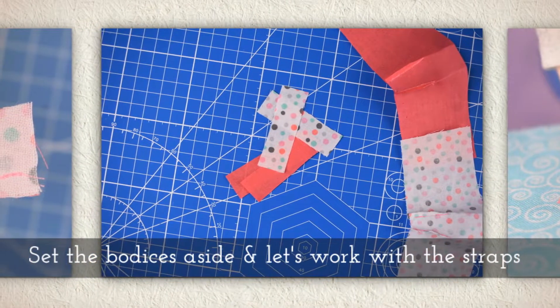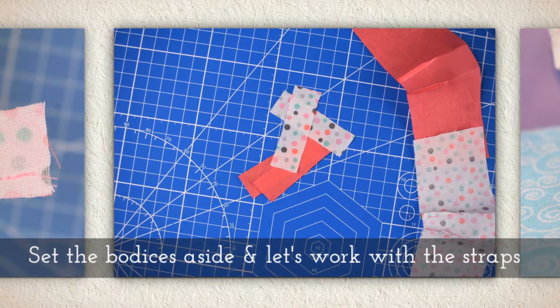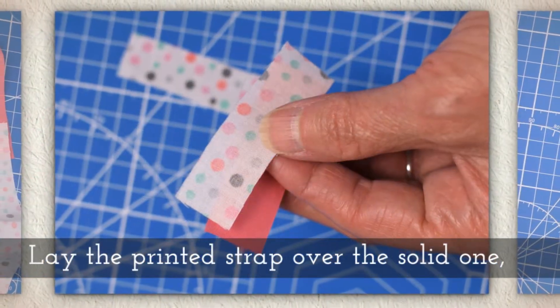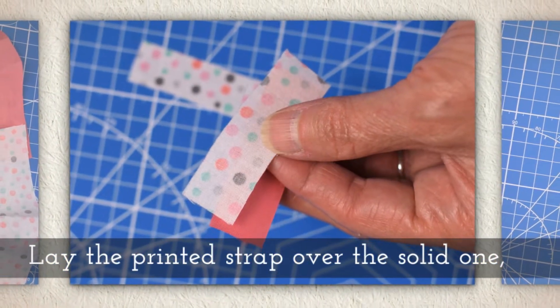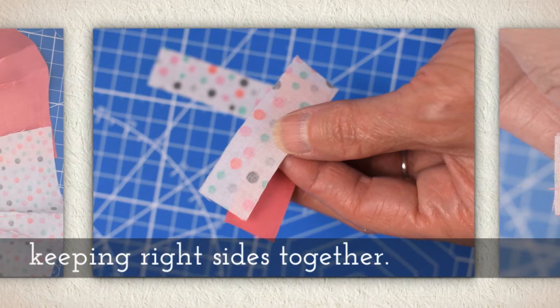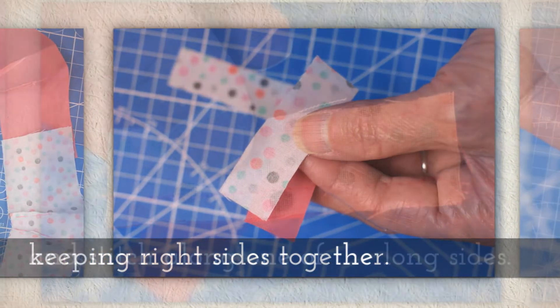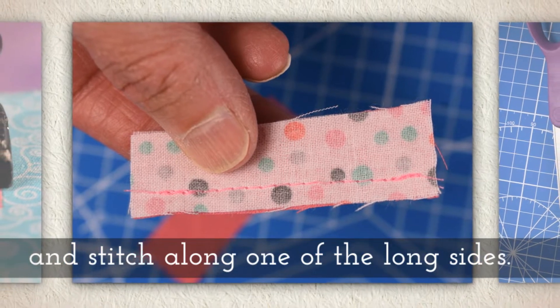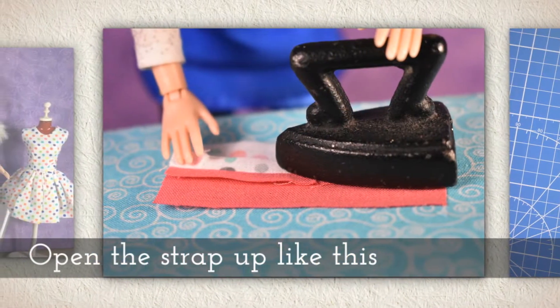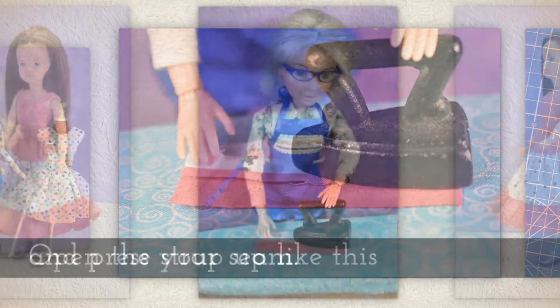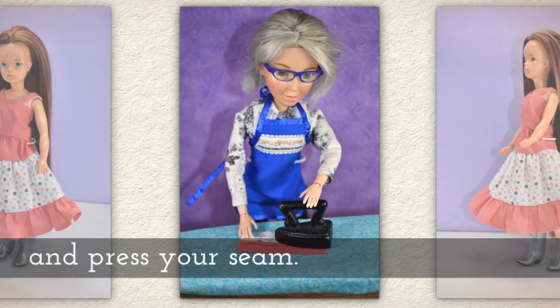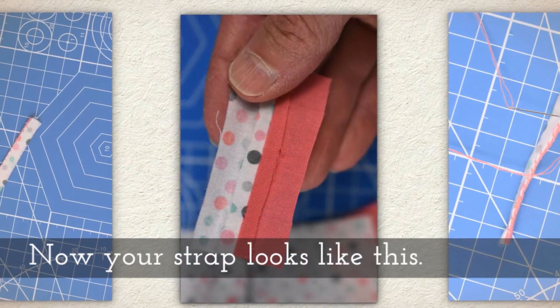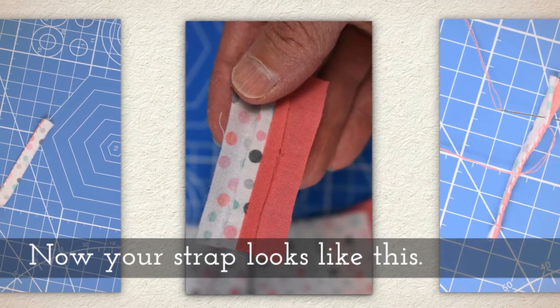Set the bodices aside and let's work with the straps for a moment. Lay the printed strap over the top of the solid fabric strap keeping right sides together and stitch along one of the long sides. Open the strap up like this and press your seam. Now your strap looks like this.